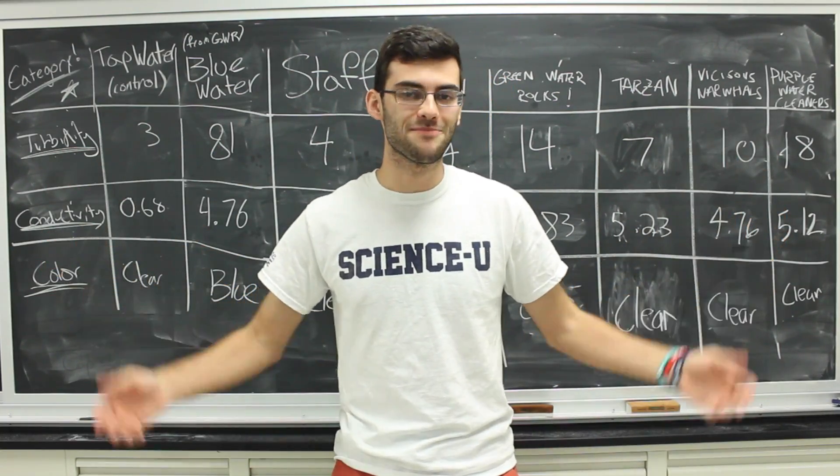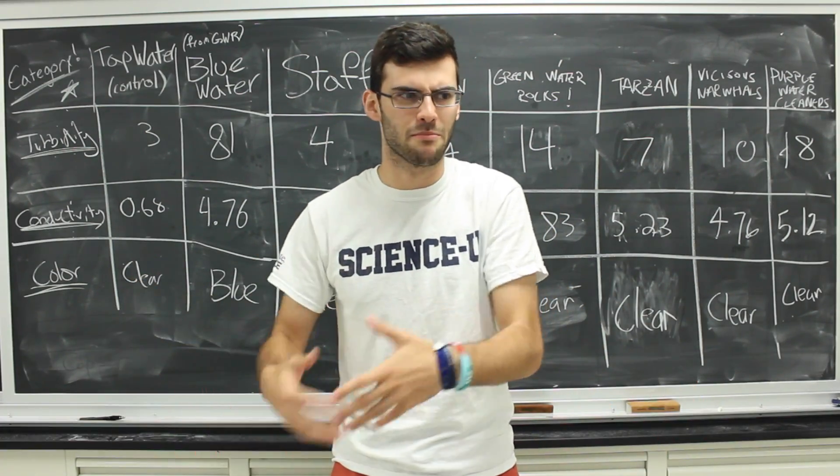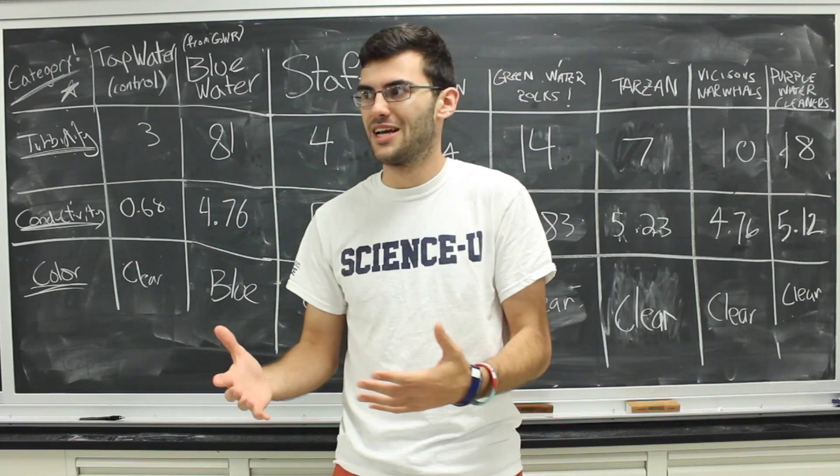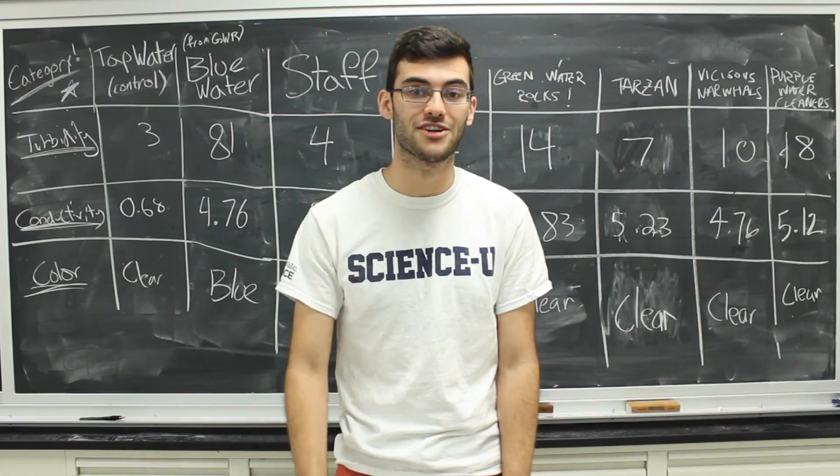And so the best way to reduce turbidity? Just the plain filter. The sand and gravel and carbon that we put in murked up the water more than it filtered it. So really, the way to get the cleanest water was just using your average coffee filter.